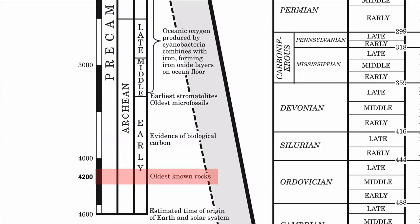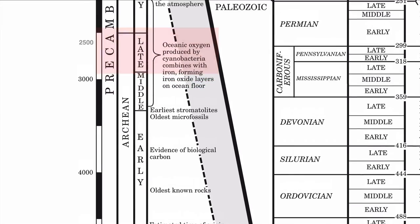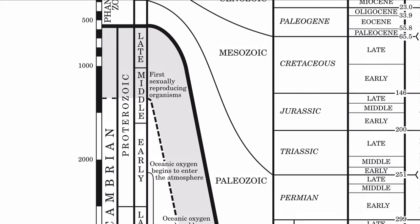Then 4.2 billion years ago: oldest known rocks. 3.7 billion years ago: biologic carbon. 3.4 billion years ago: stromatolites. 2.5 billion years ago: oxygen is produced by cyanobacteria and starts to bind with iron. About 2.1 billion years ago, oxygen enters the ocean and begins to fill up the atmosphere. And then around 1.2 billion years ago, the first sexually reproducing organisms evolved. So those are some of the events on the timescale we're given.